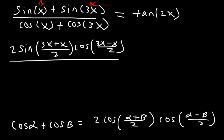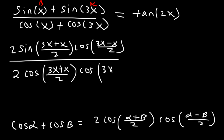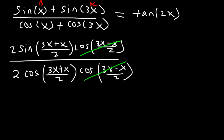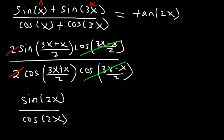Hopefully your teacher will give you a formula sheet so you don't have to memorize these equations, because that would be difficult and time-consuming. Now the denominator cosine x plus cosine 3x gives 2 cosine((3x plus x)/2) times cosine((3x minus x)/2). These two cosine expressions are exactly the same in numerator and denominator, so we can cancel them. Now 3x plus x is 4x, and 4x divided by 2 is 2x. We can also cancel the 2. So we're left with sine 2x divided by cosine 2x. Since sine divided by cosine is tangent, we have verified the identity: the expression equals tangent 2x.